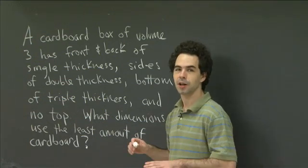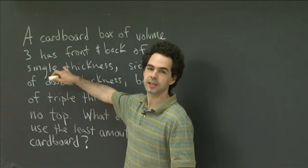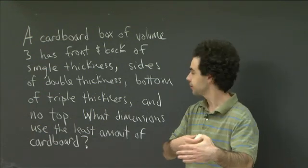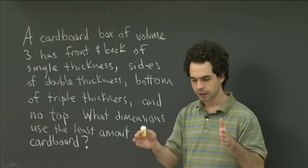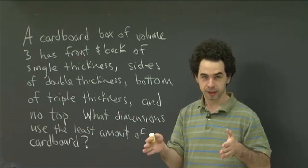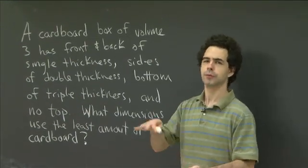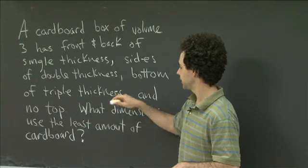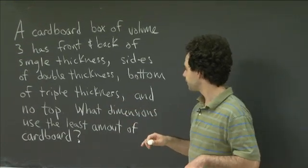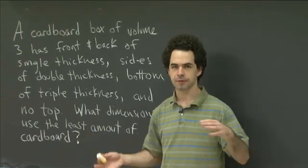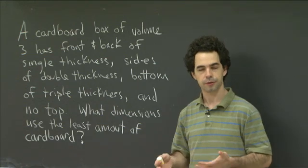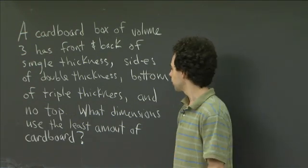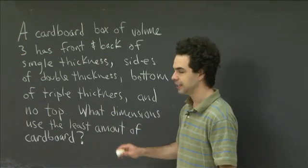Our cardboard box has to meet the following criteria. Its volume has to be 3 units. The front and back are going to be made of single thickness cardboard, but the two sides — left and right — are going to be made double thick, and the bottom is going to be made triple thick. We're not going to have a top; it's just going to be an open box with five sides. The question is: what dimensions should this box have so that we use the minimum amount of cardboard possible?